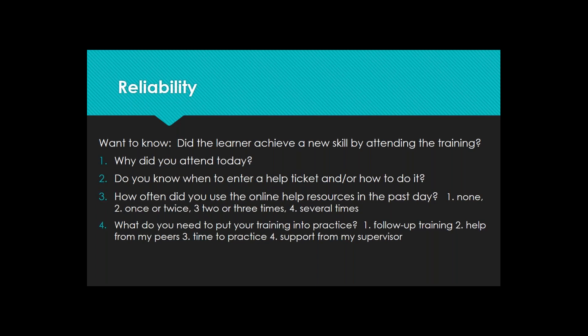The question 'Do you know when to enter a help ticket and how to do it?' is probably valid but not reliable, because there are really two questions here: 'Do you know when to enter a help ticket?' and 'Do you know how to enter one?' When you use conjunctions in a question, you often put respondents in a catch-22 — they might know when but not how, or vice versa, and can't honestly answer.